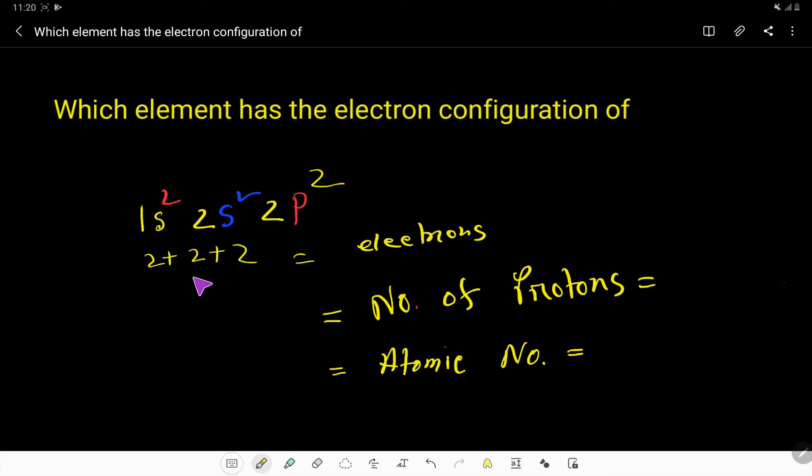So basically we are getting two plus two plus two, that is six electrons. We know that in a neutral element or atom, the number of electrons equal to the number of protons. As you know that the charge of protons is positive and the charge of electrons is negative.